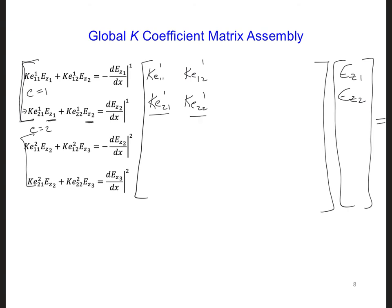Then as we move on to element 2, let's add in this third equation. And in this case, we have something multiplied by Ez 2. So it needs to go in the second column, and it's going to go in the second row because it's corresponding to node 2.